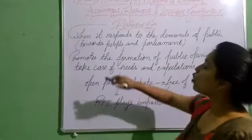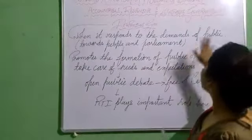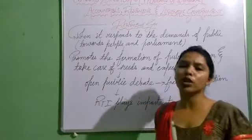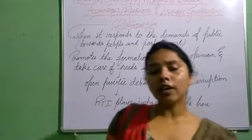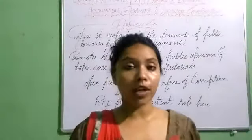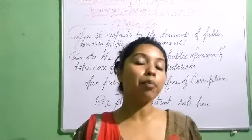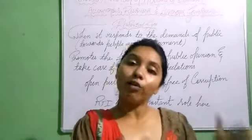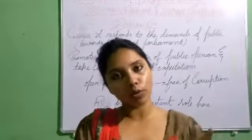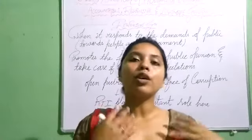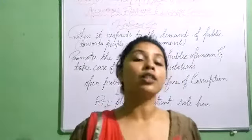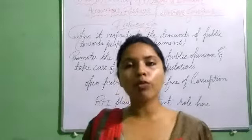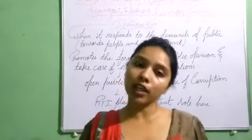As I have written in the explanation, when a government responds to the demands of the public, we call it a responsive government. Sometimes students are confused — in accountability, the government has done something first and then has to answer for it. In responsiveness, the government responds to the needs of the people — for example, if you don't have water, the government has a responsibility to respond to that need.